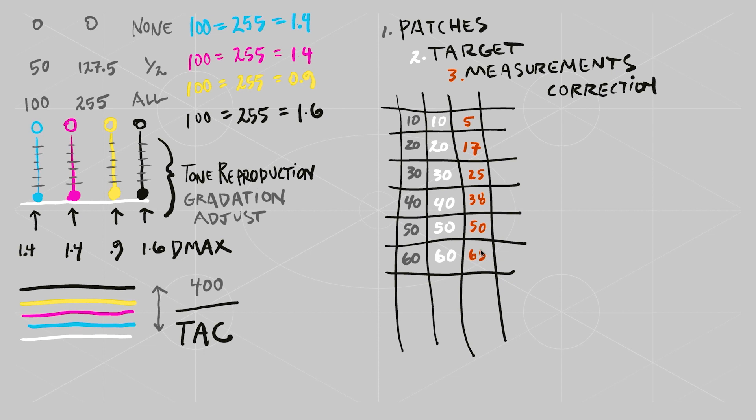So therefore, the correction in green would be add 5, add 3, add 5, add 2, no change, and take away 5.